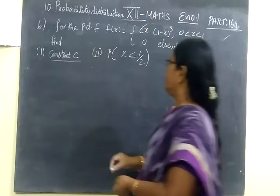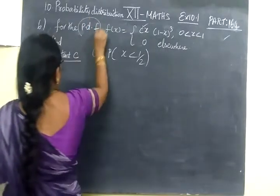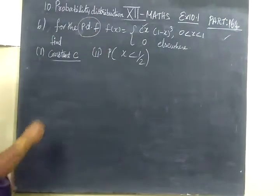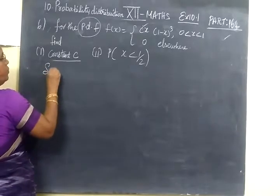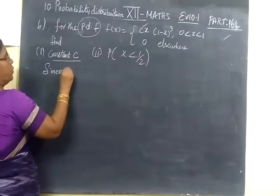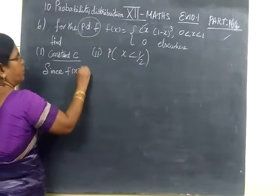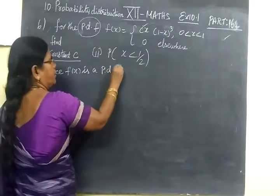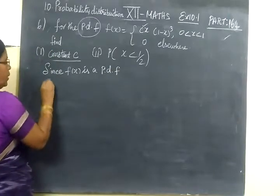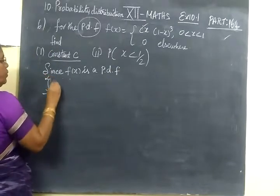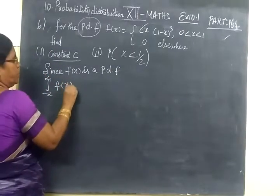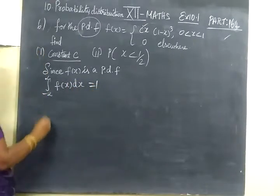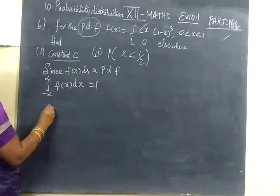And it is given pdf function, probability density function. Since f of x is a probability density function, we know the condition, minus infinity to infinity, f of x dx equal to 1.